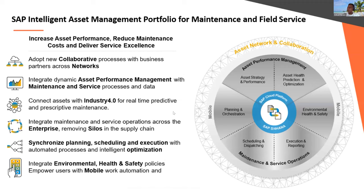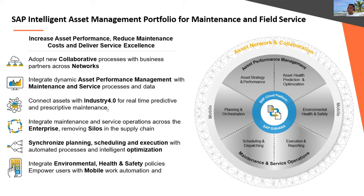The SAP IAM portfolio is divided into multiple sections: mobility with SAP Asset Manager; Asset Central Foundation as your object database; Asset Strategy and Performance Management; PAI — Predictive Asset Insights — the predictive analytics component; environmental health and safety; and Asset Network and Collaboration. That's the total combination of different modules within IAM.